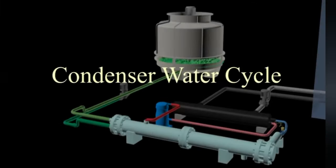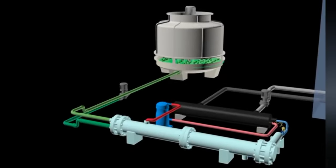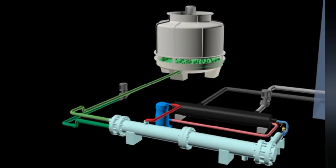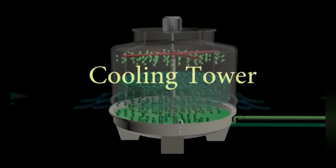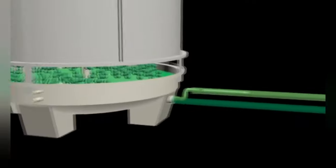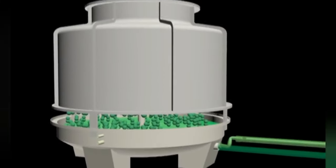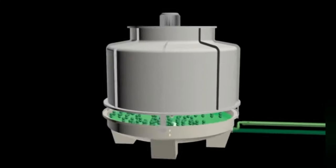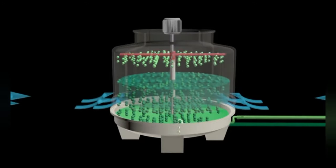The condenser water cycle consists of two basic components: the cooling tower and the water pump. The cooling tower serves to cool down the condenser water temperature so it can absorb heat from the refrigerant in the condenser.